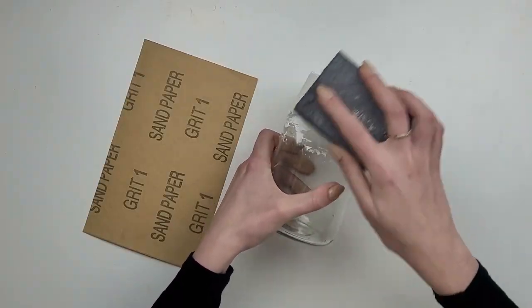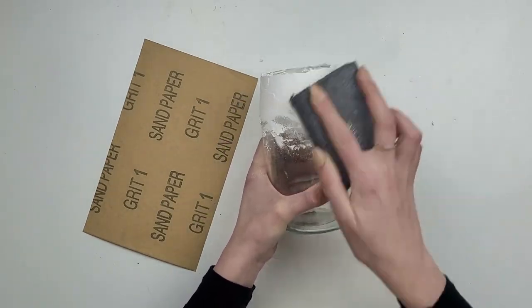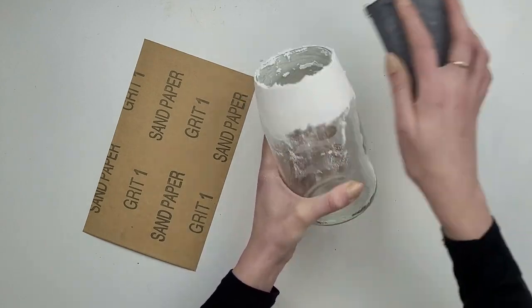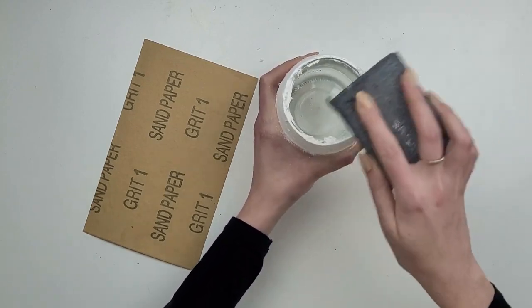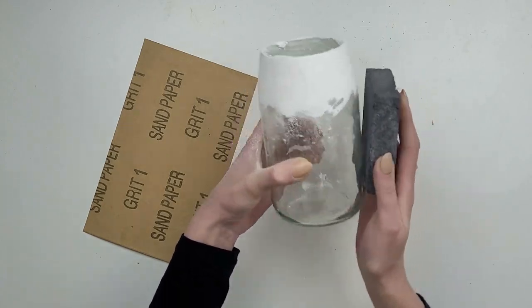And once it was dry I took the sanding block and sanded all the imperfections down. So don't worry too much if you are not able to make it super smooth with the putty knife. As long as the thickness of the filler is kind of the same all around, you can smooth it all with sanding paper.